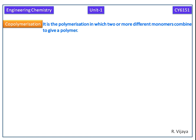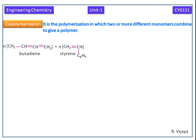Here we discuss the formation of SBR. N number of butadiene polymerized with N number of styrene, we get SBR. Now we can see how the electrons are contributing in this polymerization. In this way, butadiene and styrene undergo polymerization to give SBR.